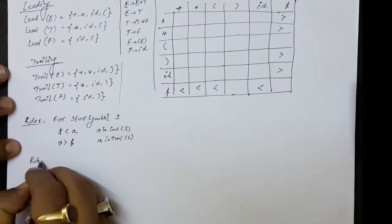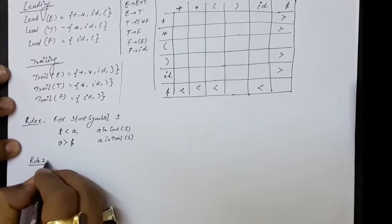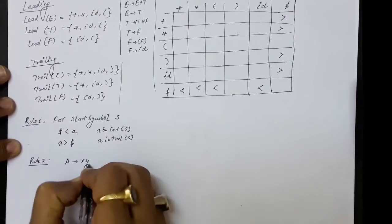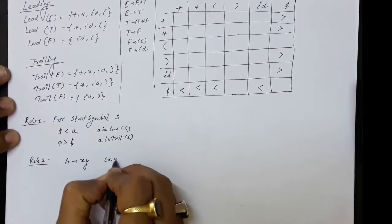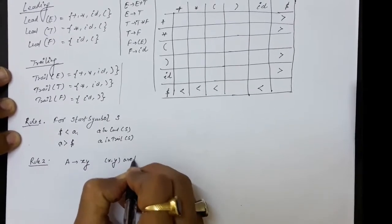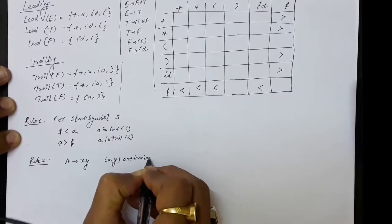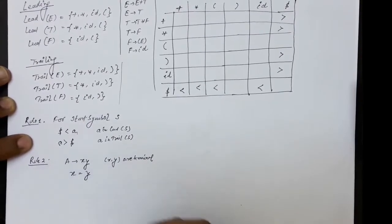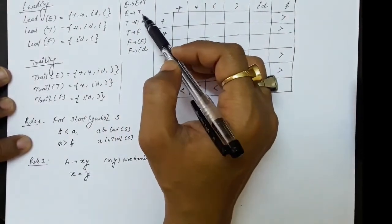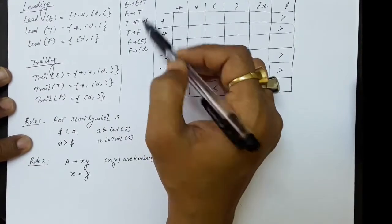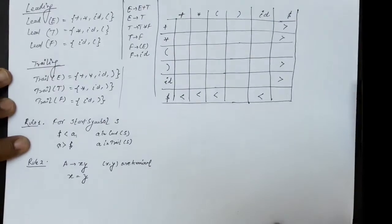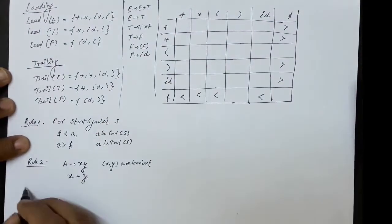Rule number two says: if we have a production A → XY where X and Y are both terminal symbols, then we set X equals Y, meaning equal precedence. Fortunately or unfortunately, we do not have any production in which two terminal symbols appear simultaneously, so this rule will not be applicable.